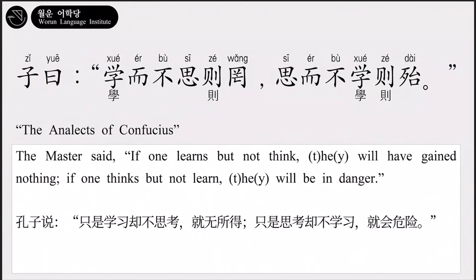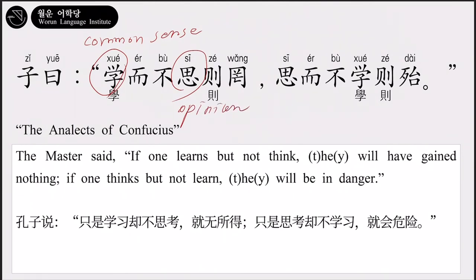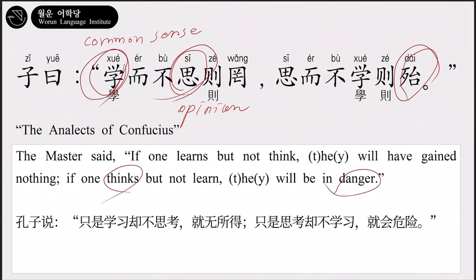What does Confucius want to instruct in this saying? The harmony of education and consideration. What we learn includes social agreement, common sense, the principles of our universe, information about our world and countries, what's right, what's moral or ethical, etc. However, even if we have this knowledge, it could be useless and meaningless without our own opinions. When it comes to memorizing and storing information, AI — artificial intelligence — is much faster and more precise. So we have to consider, we have to think. Creativity is an instinct for survival in some aspects. Of course, just thinking without education is also dangerous — the danger of prejudice and dogma. Therefore, Confucius requested the harmony of learning and thinking about 2,000 years ago.